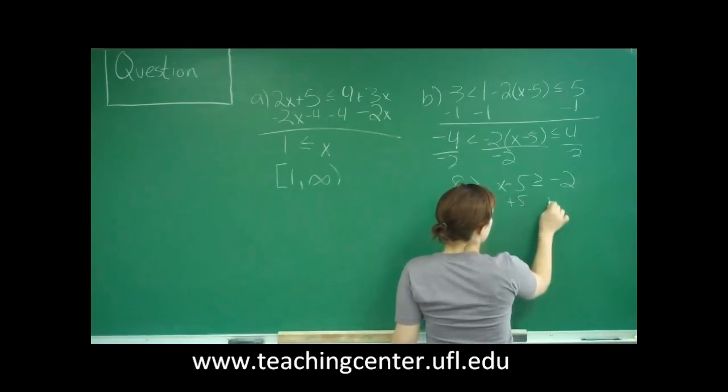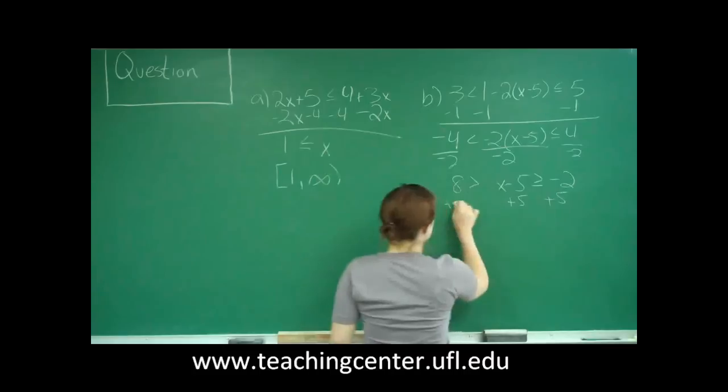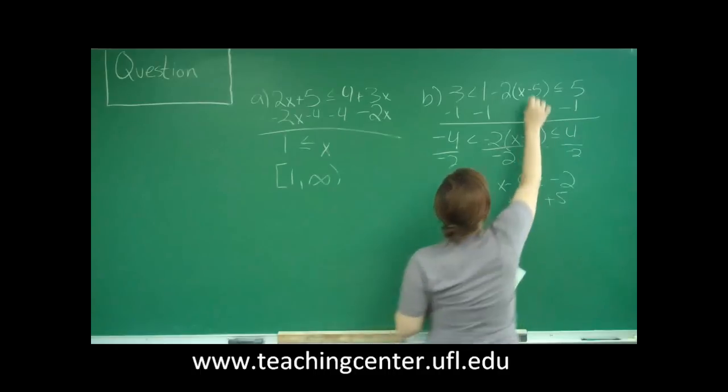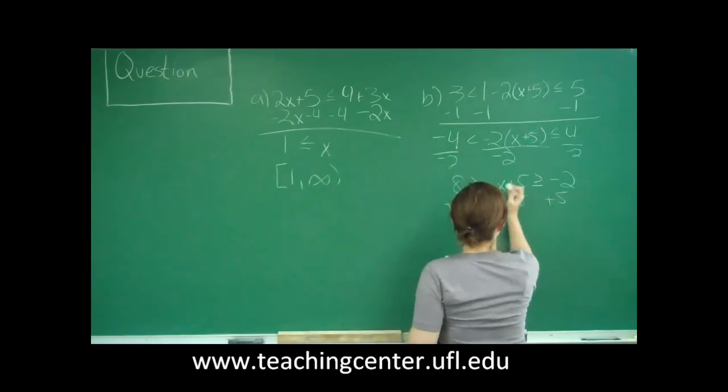So this becomes 8 is greater than x minus 5, which is greater than or equal to negative 2. So then we add 5 to every side. Oh, sorry. And this is supposed to be plus as well. Sorry.